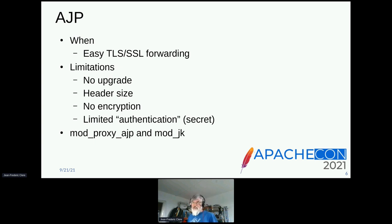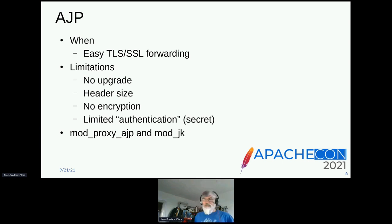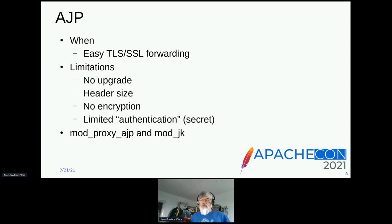It has a bunch of limitations. It's limited because it does not have an upgrade — for example, you can't change the protocol with it. There are some limitations on the other side: it adds no encryption, except you would tunnel it. It has limited authentication — basically it uses a secret between HTTPD and Tomcat. So this is probably something you are okay to use inside a very safe network, but maybe not otherwise. We can use AJP in mod_proxy_ajp and in mod_jk.